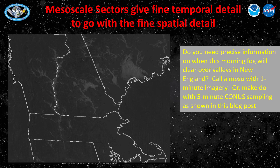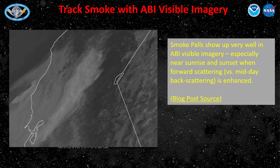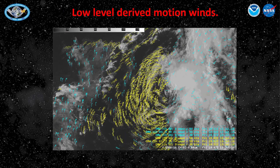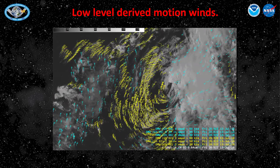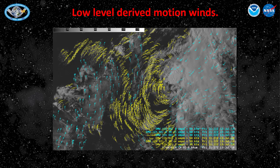If you want to know precisely when, for example, fog might dissipate, call a meso. Visible imagery allows for real-time monitoring of the horizontal extent of smoke plumes. This is vital information for air quality, and that information can impact your high temperature forecast as well. Visible imagery is the primary source of low-level derived motion winds during the daytime, which is important for identifying areas of wind shear and jet maxima.